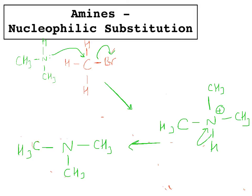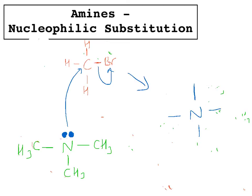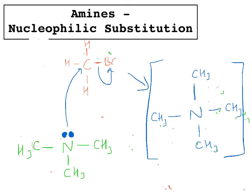This tertiary amine will react once more. It still has a lone pair; that lone pair will attack that carbon, the bromine will leave, and you will end up with four CH3 groups around the nitrogen. That's going to be positively charged, and you've got a bromine counter-ion which left in the first place. And so that's called a quaternary ammonium salt.